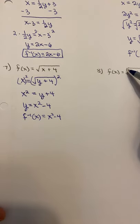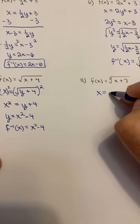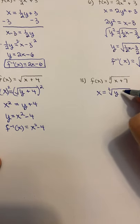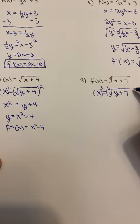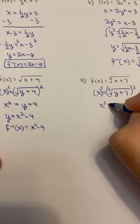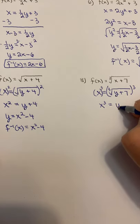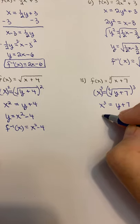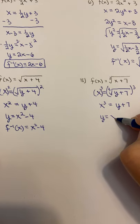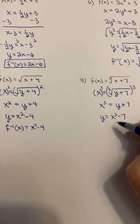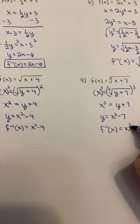The last one is a very similar problem except this is a cube root instead of a square root. The approach doesn't change: switch the x and y, then solve for y. To eliminate a cube root, do the inverse — cube it. So it would be x cubed. Anytime the index matches the exponent, they cancel each other out, leaving y plus 7. Subtract 7 from both sides — y equals x cubed minus 7. Then write it in inverse notation.